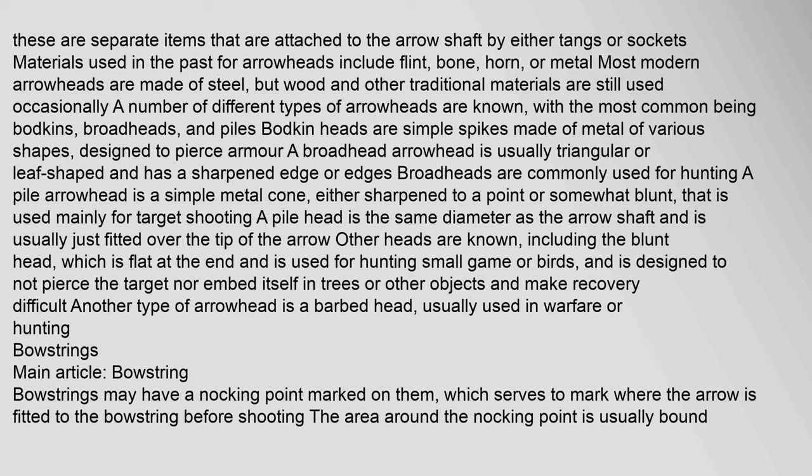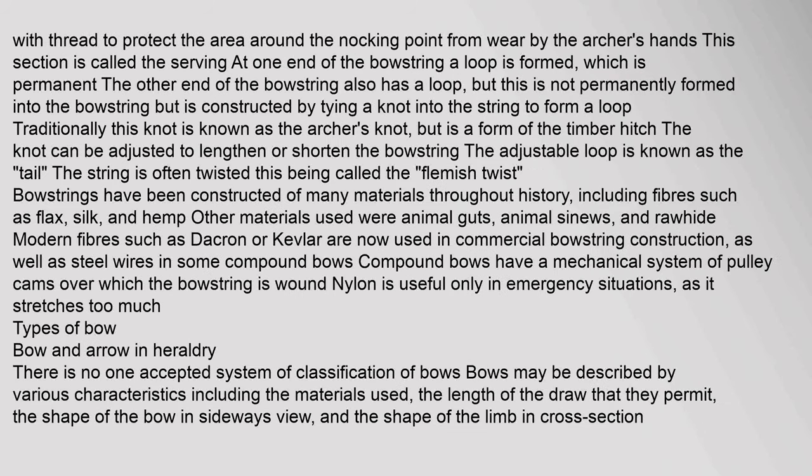Bowstrings may have a nocking point marked on them, which serves to mark where the arrow is fitted to the bowstring before shooting. The area around the nocking point is usually bound with thread to protect it from wear by the archer's hands; this section is called the serving. At one end of the bowstring a permanent loop is formed. The other end also has a loop, constructed by tying a knot known as the archer's knot, a form of the timber hitch. The adjustable loop is known as the tail, and the string is often twisted — this being called the Flemish twist.